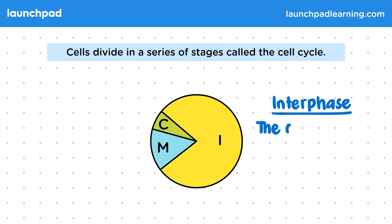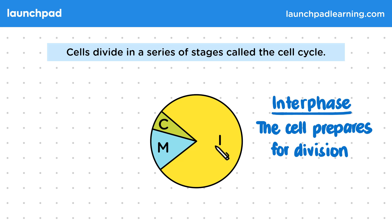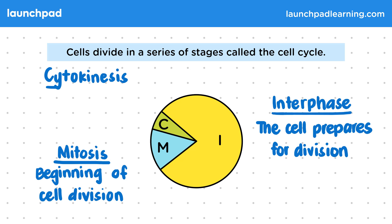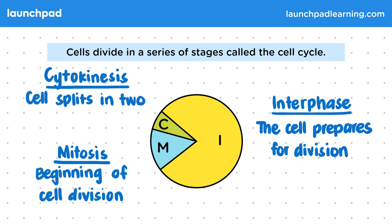Interphase is where the cell prepares for division and is where the cell spends most of its life. The M here represents mitosis — this is the beginning of cell division, where the cell divides its contents ready for splitting into two. And finally, this C represents cytokinesis. This is the end of cell division and the final part of the cell cycle, in which the cell splits in two. It's named cytokinesis because it involves division of the cytoplasm.